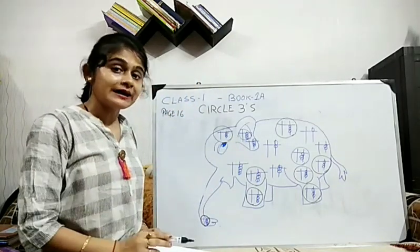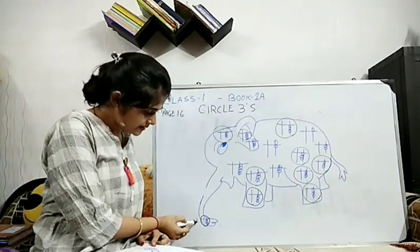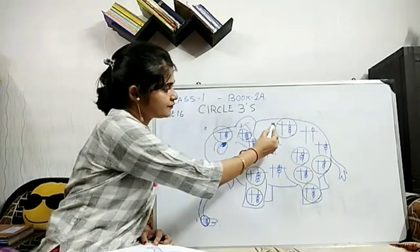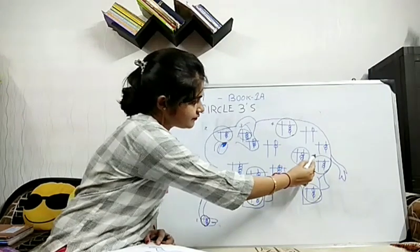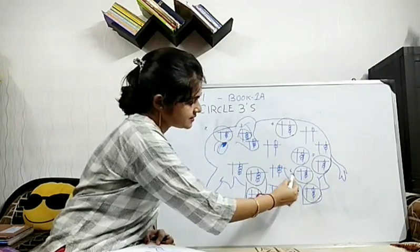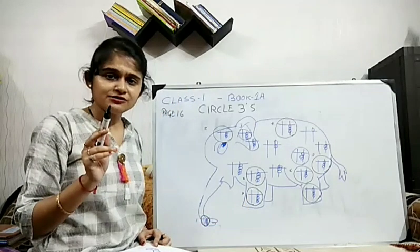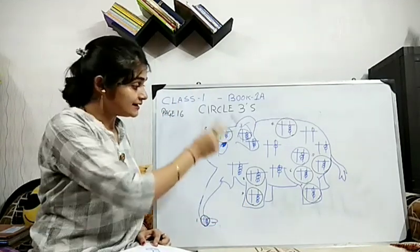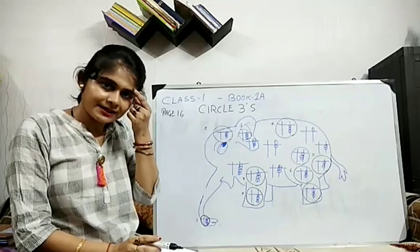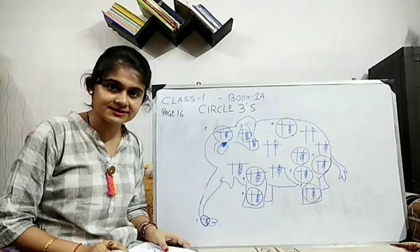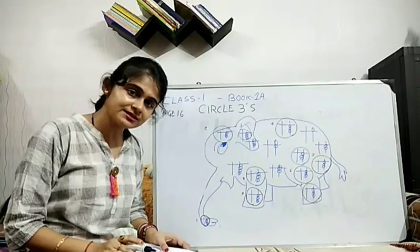Now let's count. How many 3's are there? 1, 2, 3, 4, 5, 6, 7, 8, 9. In total, you will get 9 3's. Okay. And you will circle it. And this is only there in page number 16. So you will do it in this way. Take the pic and send it to me.